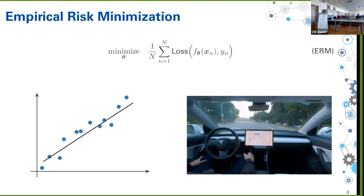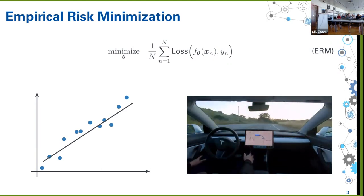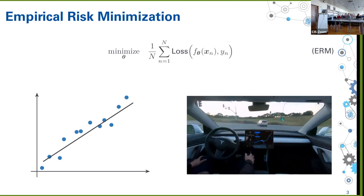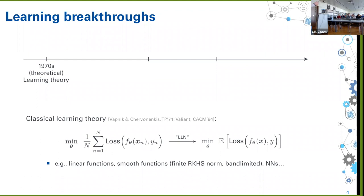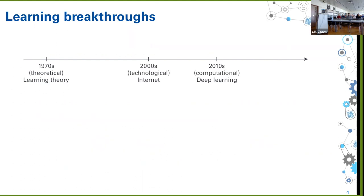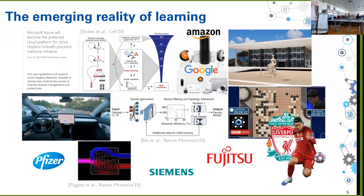ERM is not a new idea; it's been used in statistical inference for 200 years and is the basis of what Gauss used to fit planetary orbits. But linear regression doesn't drive cars, so something else is going on. What made ERM the transformative engine it is today are essentially three breakthroughs over the past 50 years. The first is the development of classical learning theory in the 70s and 80s, showing that ERM is the solution of a statistical problem where something like the law of large numbers holds uniformly.